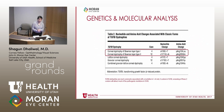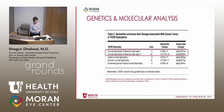Genetics and molecular analysis also now help distinguish these two diseases. Both result from missense mutations but at different codons. Reis-Bücklers corneal dystrophy is due to an arginine-to-leucine mutation at codon 124, whereas Thiel-Behnke is due to an arginine-to-glutamine mutation at codon 555.